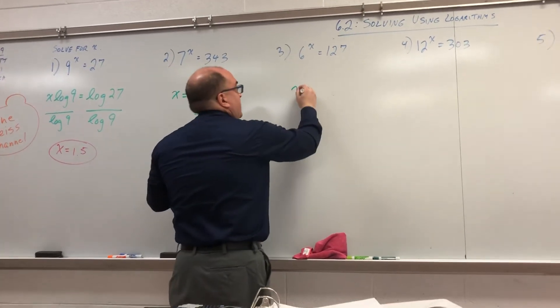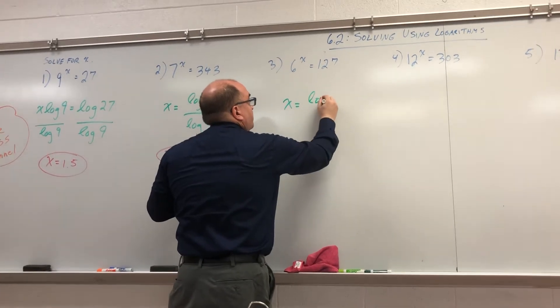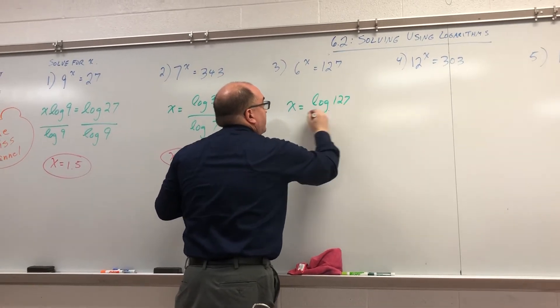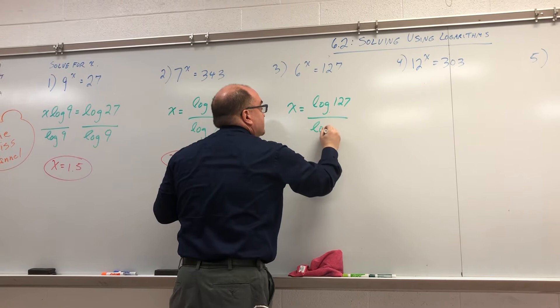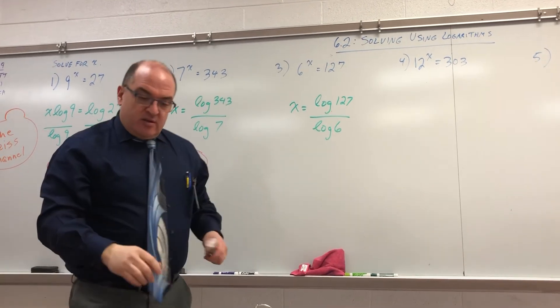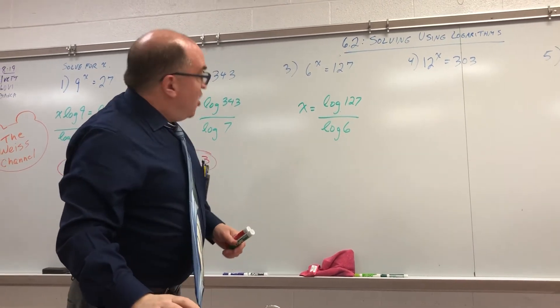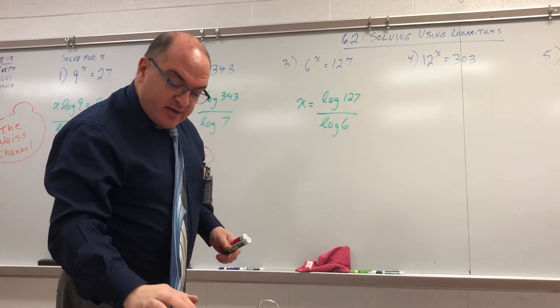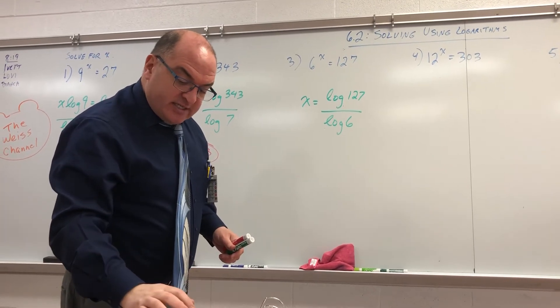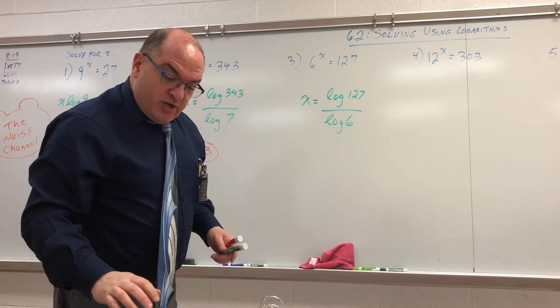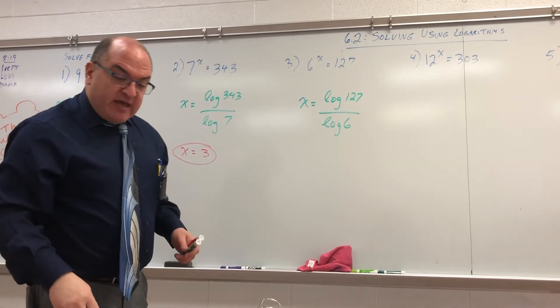Here, X equals log 127 divided by log 6. Try it on your calculator. Log 127 divided by log 6. You get 2.70.